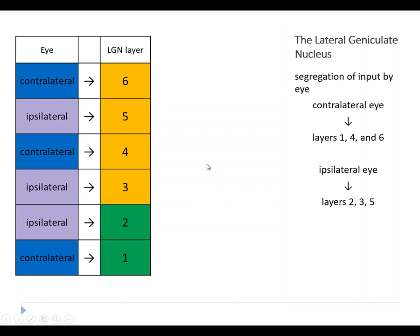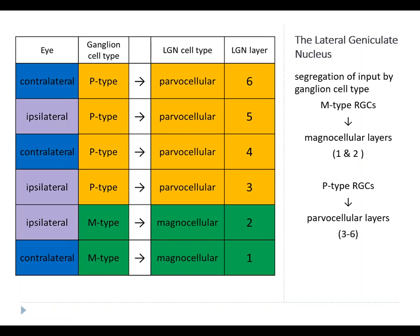There's another degree of segregation based on retinal ganglion cell type. There are two types: P-type and M-type. M-type cells are larger with much larger dendritic fields; P-type cells are smaller and more slowly adapting, involved in detecting shape and fine detail. M-type cells are more important for detecting movement. These two types project to different layers: P-type retinal ganglion cells project only to the parvocellular layers, while M-type axons project to the magnocellular layers — layers one and two — and the parvocellular layers are three, four, five, and six.